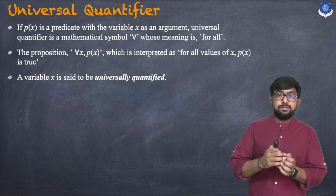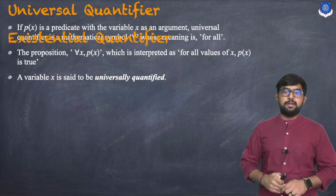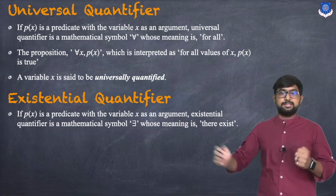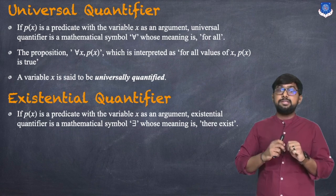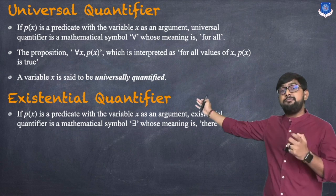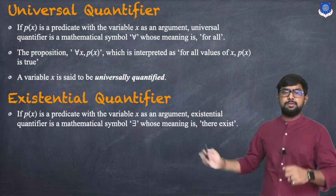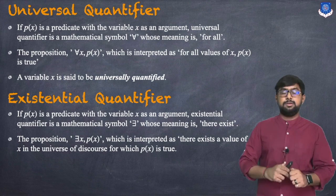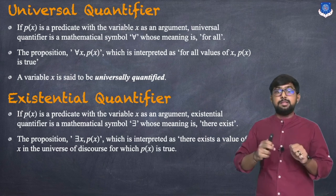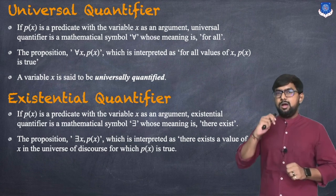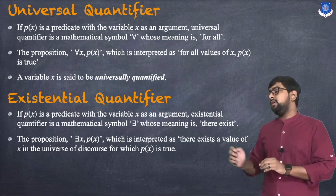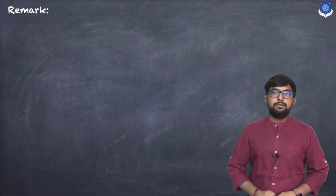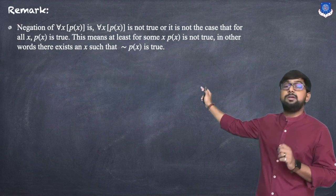A variable x is said to be universally quantified. The second quantifier is the existential quantifier. If P(x) is a predicate with variable x as an argument, the existential quantifier is the symbol '∃' (a rotated E), meaning 'there exists'. The proposition '∃x, P(x)' is interpreted as: there exists a value of x in the universe of discourse for which P(x) is true.